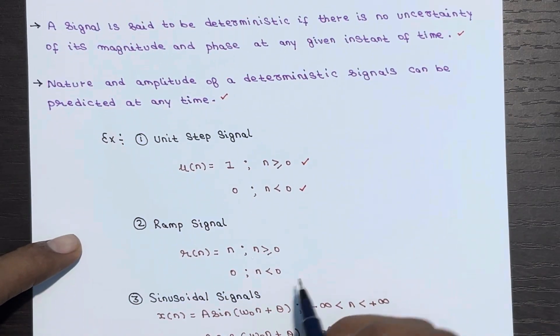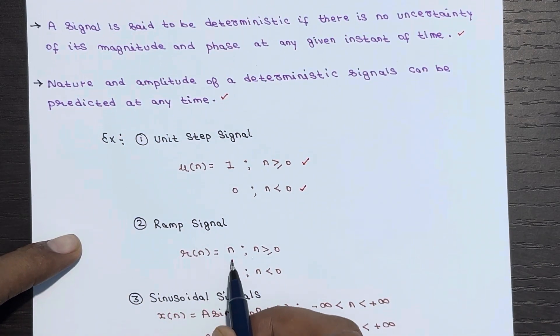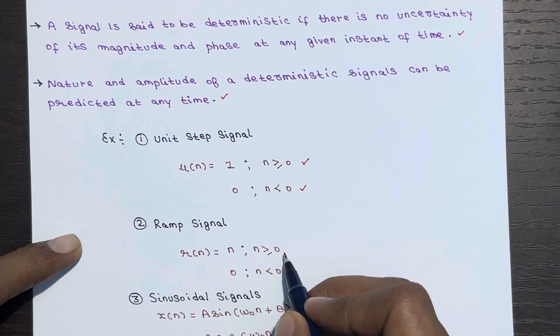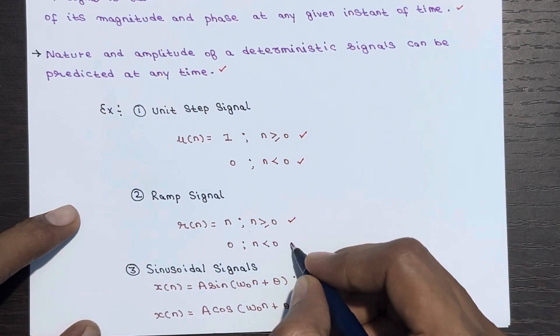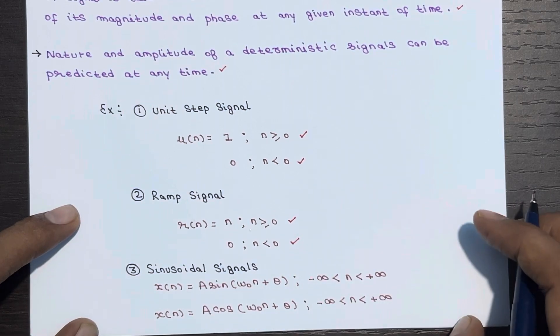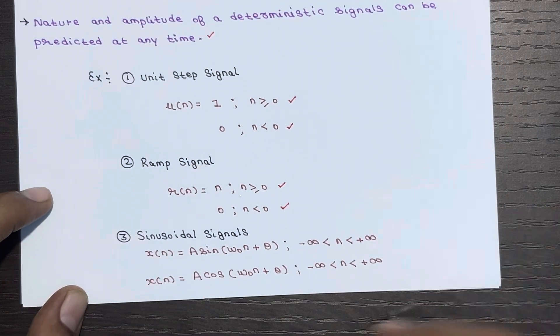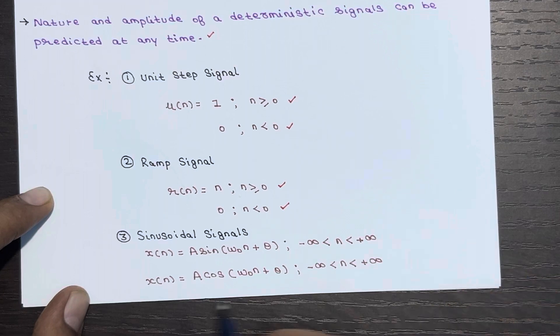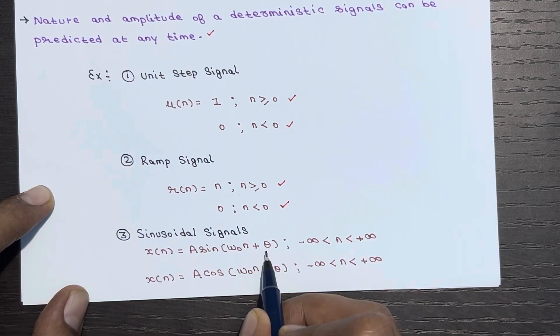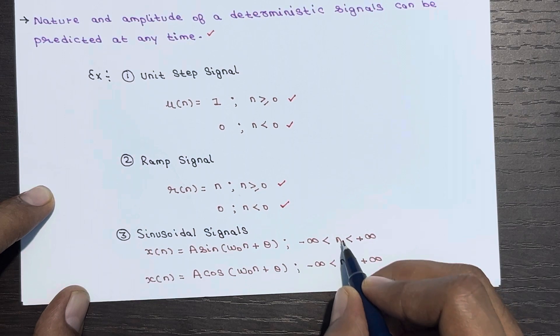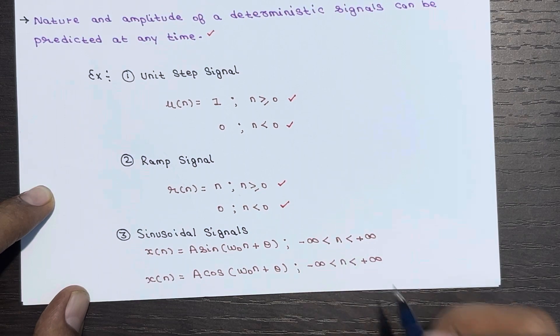Next is the ramp signal. r(n) = n for n ≥ 0 and 0 for n < 0. We have sinusoidal signals also like x(n) = A sin(ω₀n + θ) where n lies between minus infinity to plus infinity.